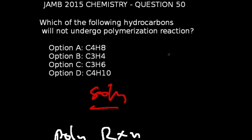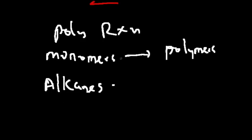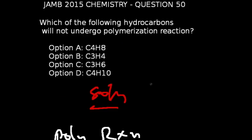Question 50 of JAM 2015 chemistry exams: Which of the following hydrocarbons will not undergo polymerization reaction? Polymerization is a reaction where smaller units called monomers come together to form larger units called polymers. This reaction does not apply to alkanes because alkanes contain only single bonds. The correct answer is option D, which is n-butane.